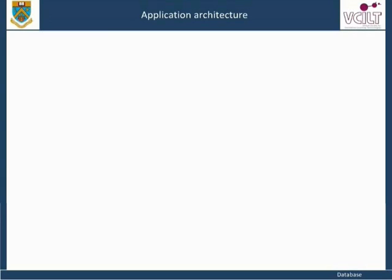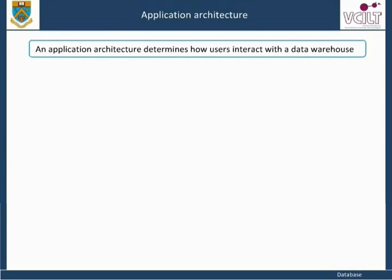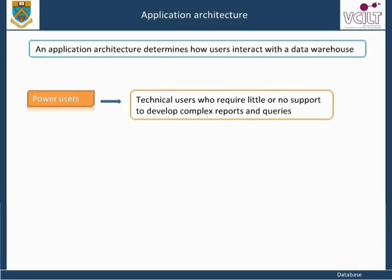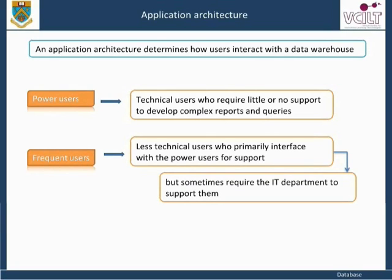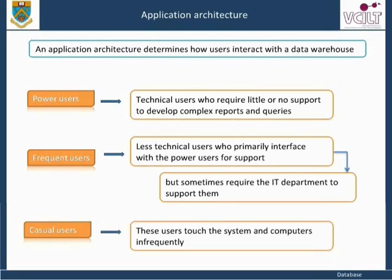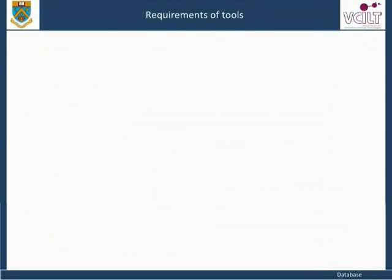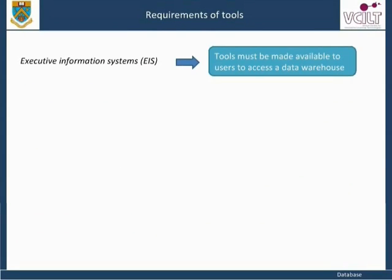An application architecture determines how users interact with a data warehouse. User categories include power users — technical users who require little or no support to develop complex reports and queries; frequent users — less technical users who primarily interface with power users for support but sometimes require the app department; and casual users — those who touch the system and computers infrequently. Tools must be made available to users to access a data warehouse and should be carefully selected for efficiency and compatibility.